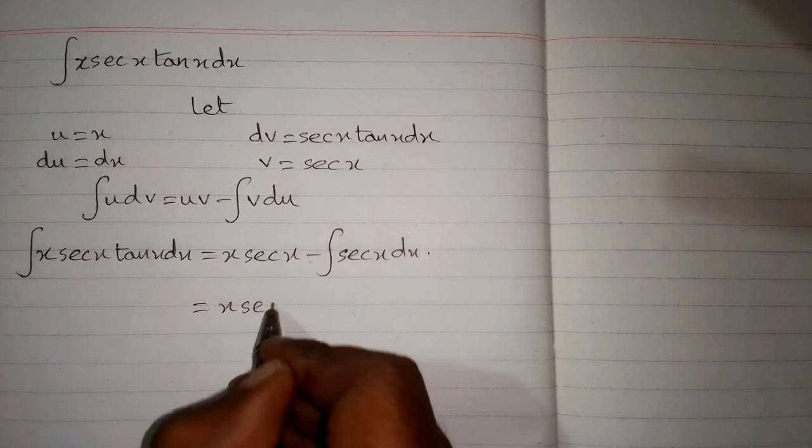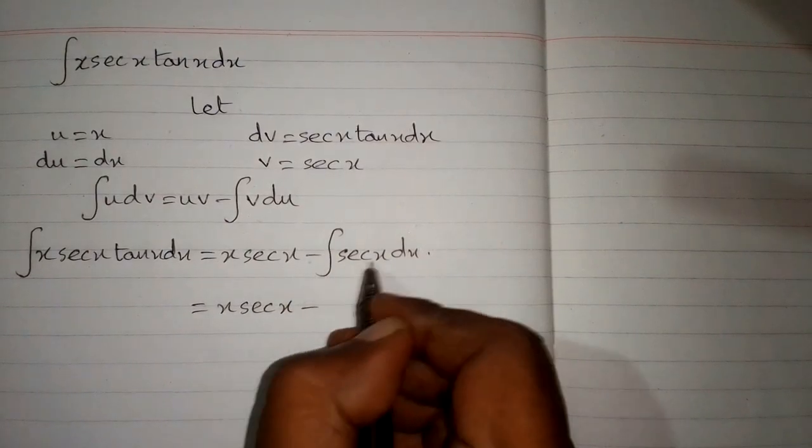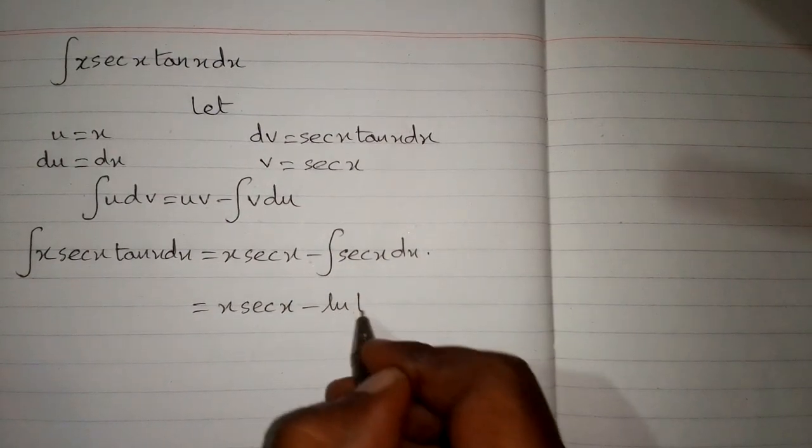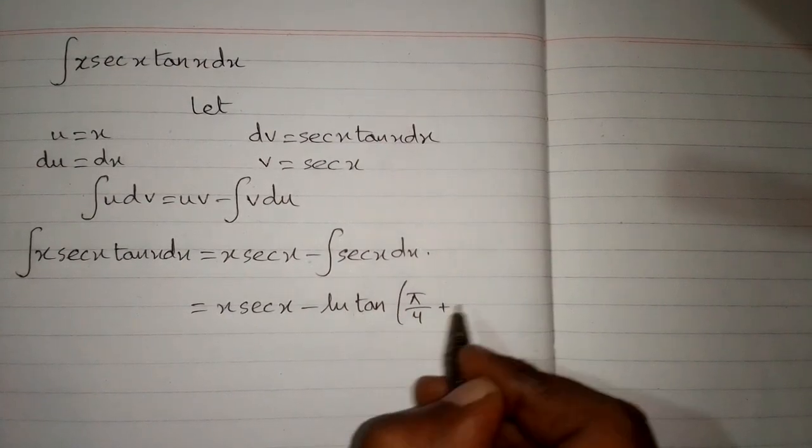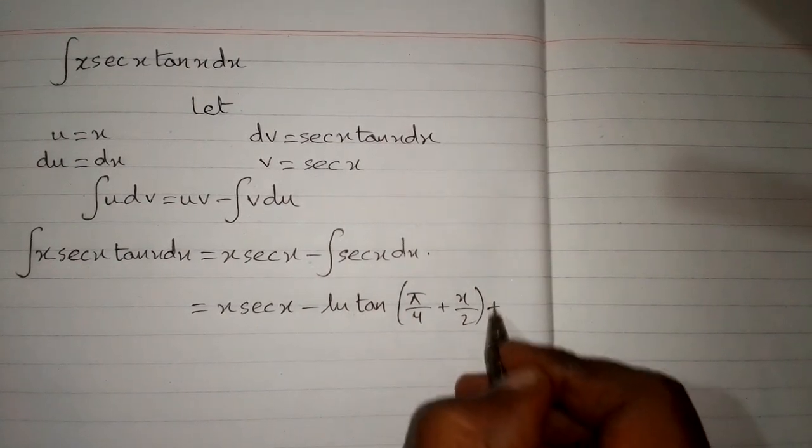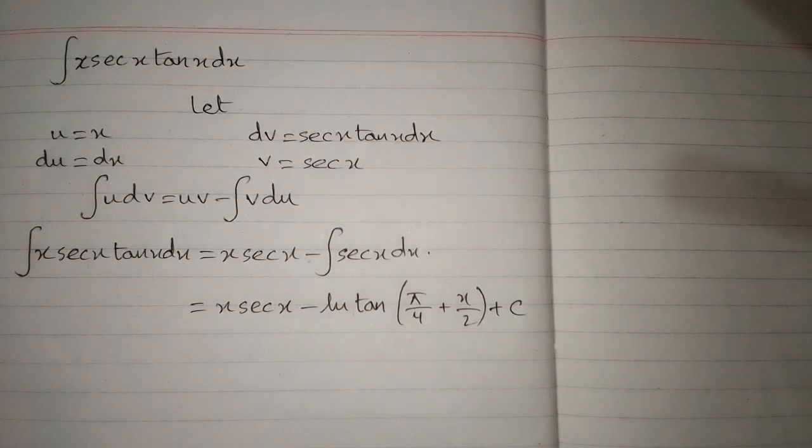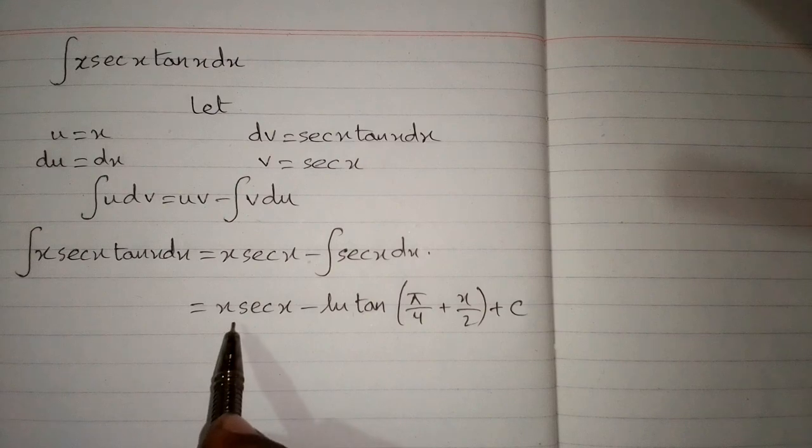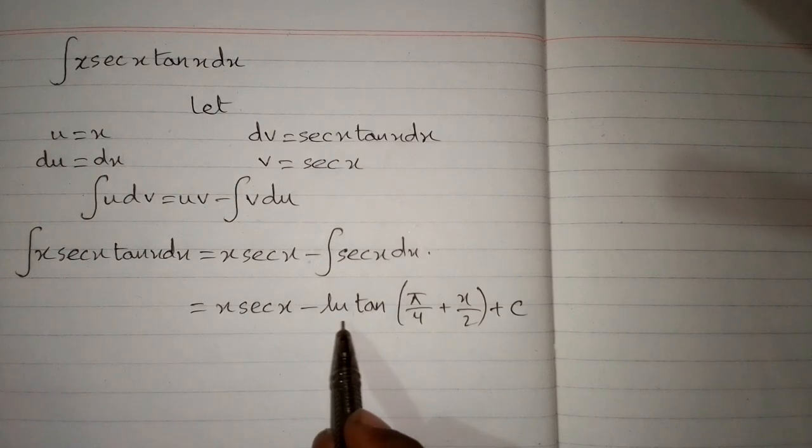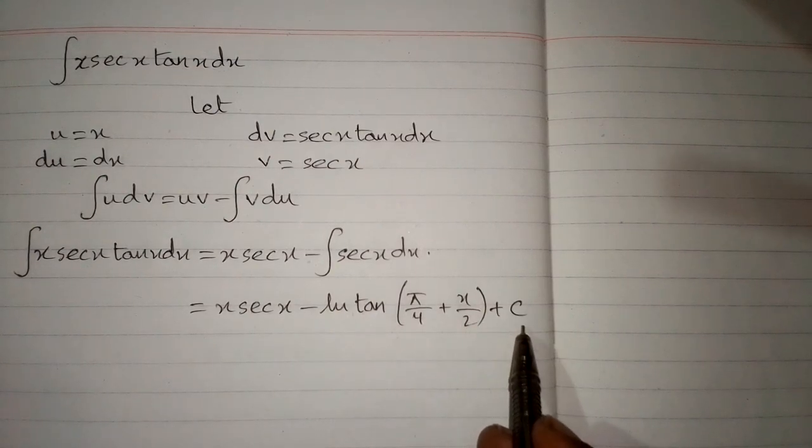This gives us x sec x minus the integral of sec x, which is ln of tan(π/4 + x/2), plus c, where c is the constant of integration. Therefore, the integral of x sec x tan x is x sec x minus ln of tan(π/4 + x/2) plus c.